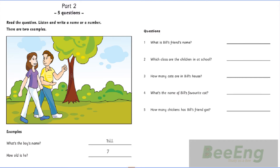3. Have you got a dog in your house, Bill? No. But I've got five cats. How many? Five cats.